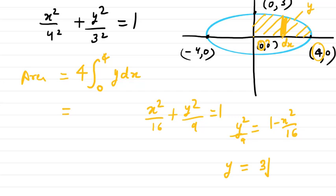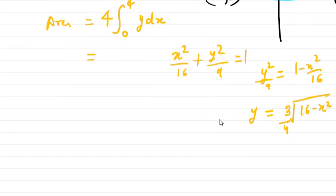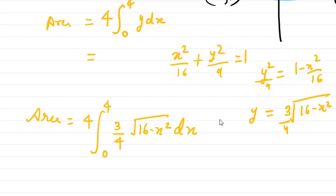3 times the square root of (16 - x²)/4. So this will be the value of y. I'll simply put these values here for finding the area. So area will equal 4 times the integral from 0 to 4 of (3/4)√(16 - x²) dx.